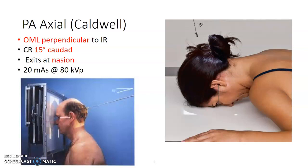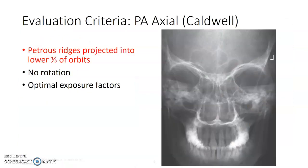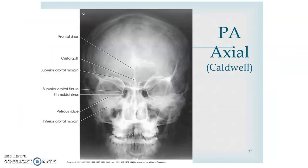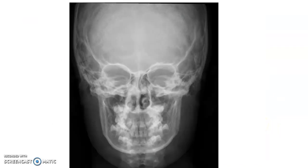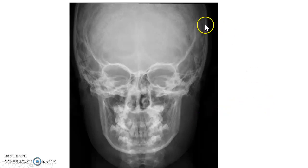For the Caldwell, the central ray is 15 degrees caudad, exiting at the nasion, and the petrous ridges are projected into the lower one-third of the orbits. Looking at this x-ray demonstration, I want you to evaluate it for quality. The first thing jumping out at me is collimation — we've got down to the C-spine, we've got the whole skull. Do we need that? No — let's collimate it in.